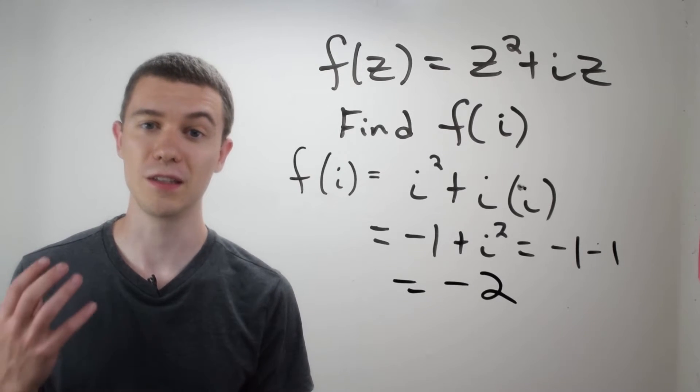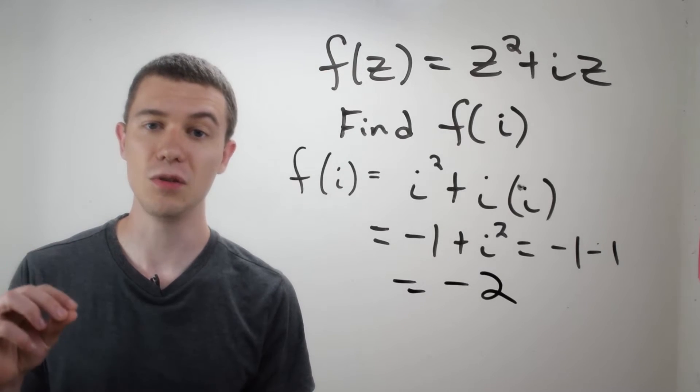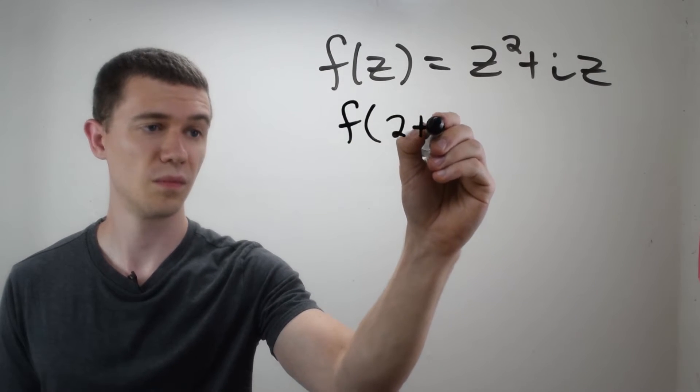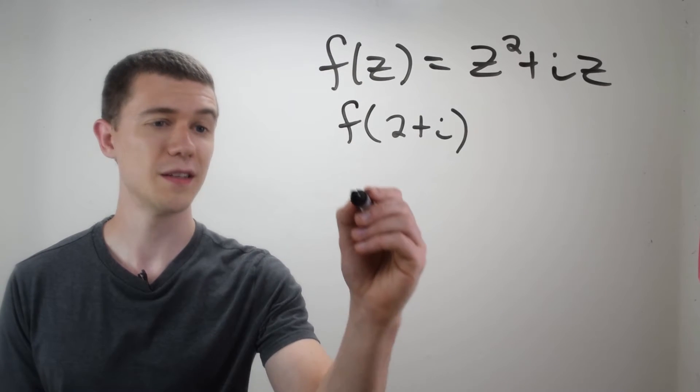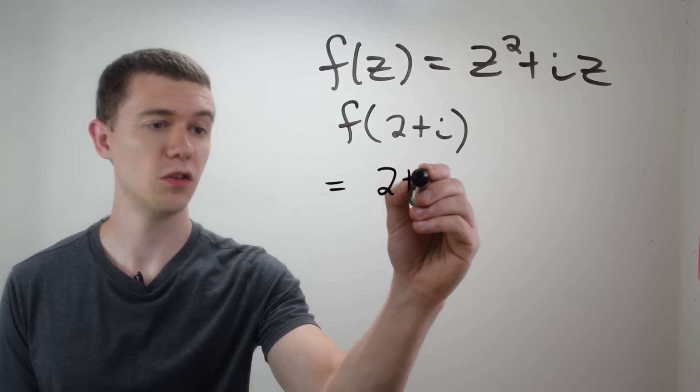Anytime you want to evaluate a complex function, we simply substitute in the value for z. If I want to find f of 2 plus i, I'll simply substitute in 2 plus i.